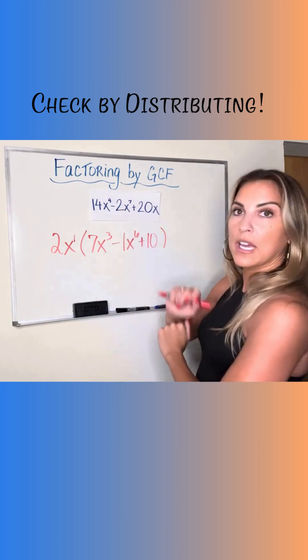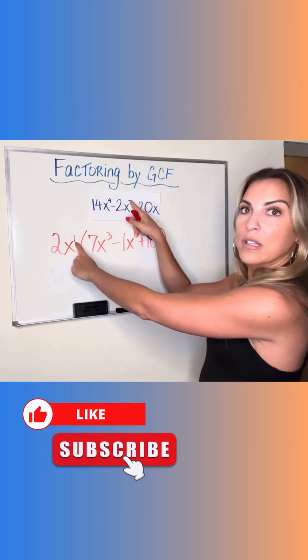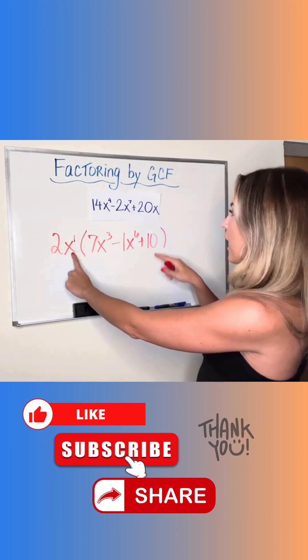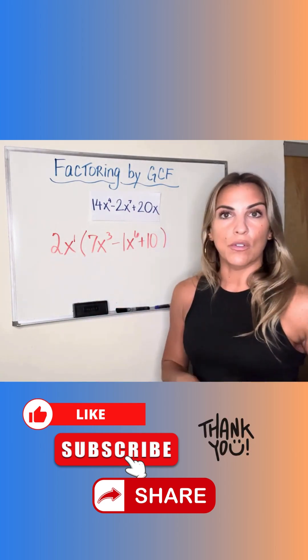2 times negative 1 is negative 2. Keep my x, add my exponents, there's that 7. 2 times 10 is 20. I only have an x to the first and that's exactly what I had in my original expression.